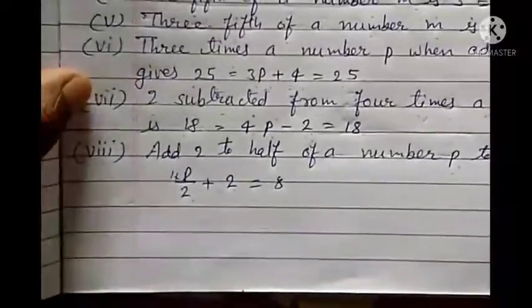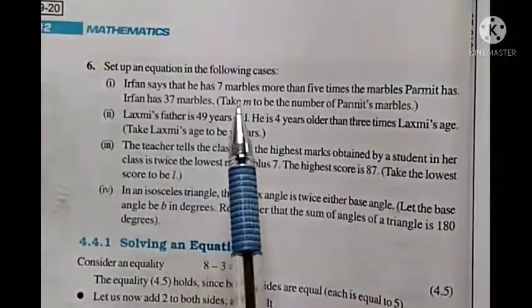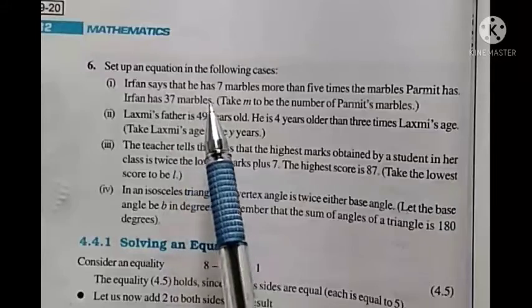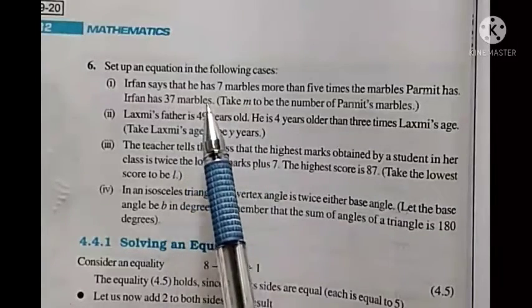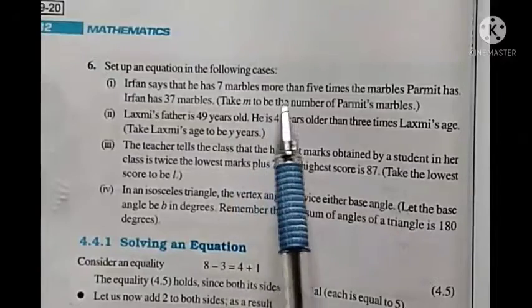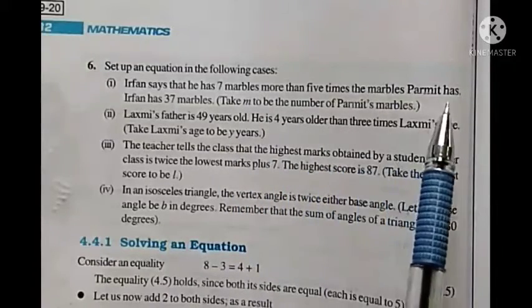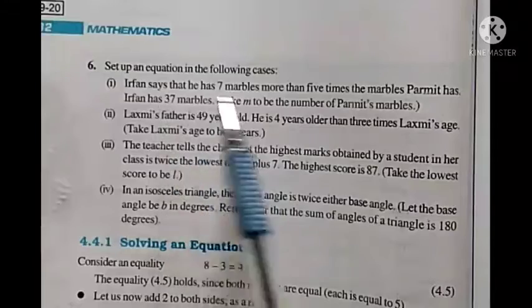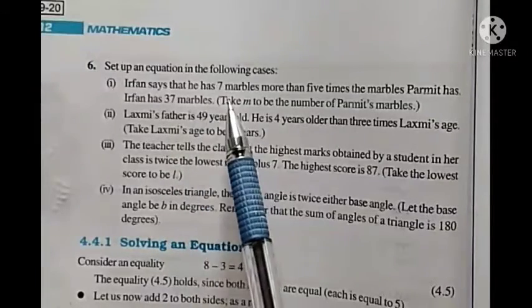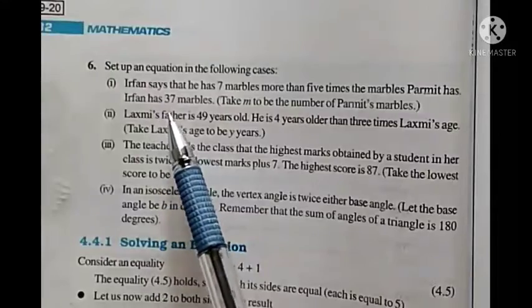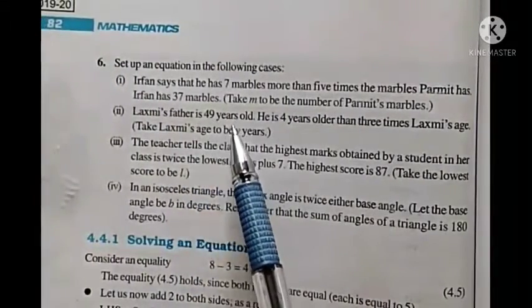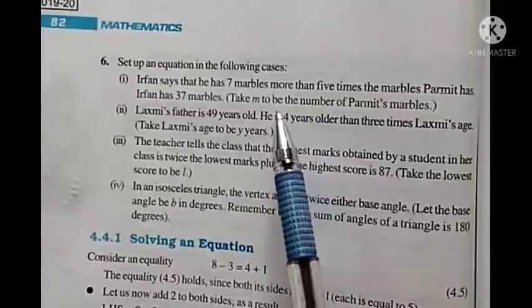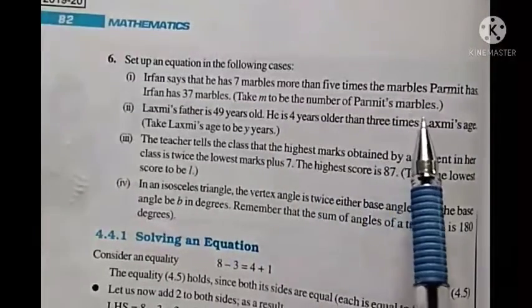Now question 6: Set up an equation in the following cases. First: Irfan says he has 7 marbles more than five times the marbles Parmit has. Irfan has 37 marbles. We need to form an equation for Parmit's marbles. Irfan has 5 times Parmit's marbles plus 7 more, totaling 37.